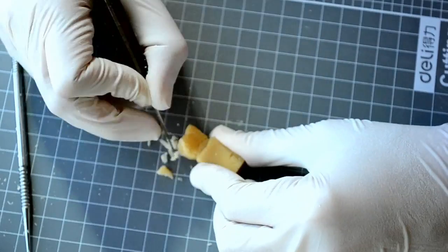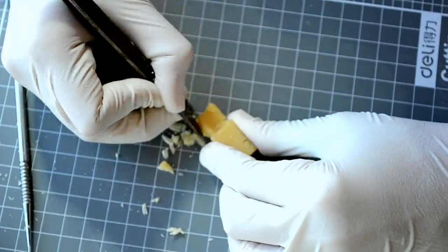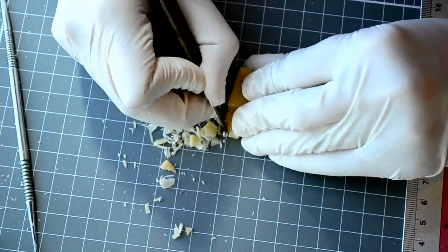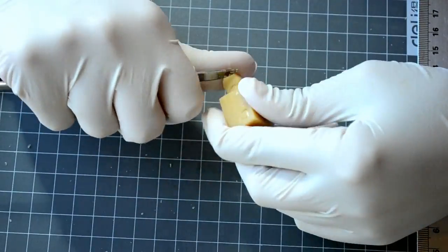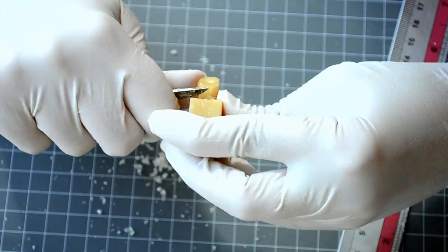Now you can start carving the mesial and distal aspects. Use your wax knife for initial carving, then move on to using the Lecron carver for smoother finishing.